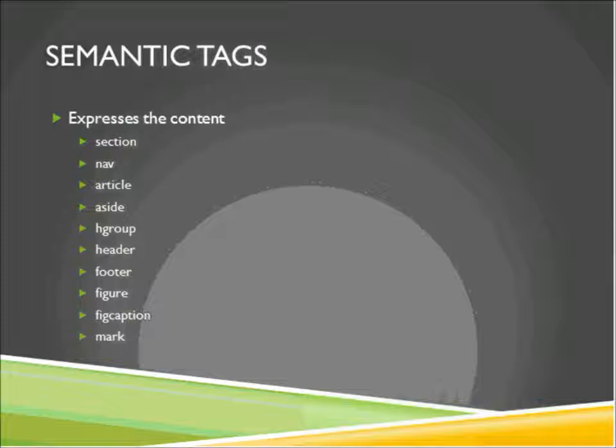With semantic tags, search engine optimization can figure out exactly what this content means. Accessibility readers — things like screen readers — can understand what this content is and treat it appropriately. If someone has limited vision, a special browser could look for the header tag and make the text even bigger, or if there's a figure on the page, it can zoom in so you can see the bigger picture. It just makes reading and organizing the page a lot easier.